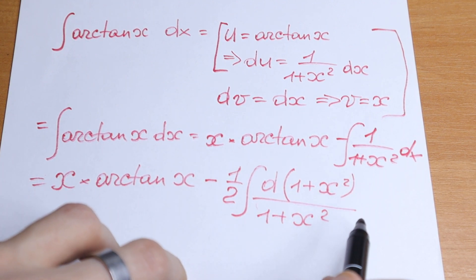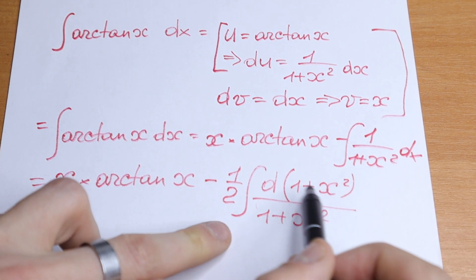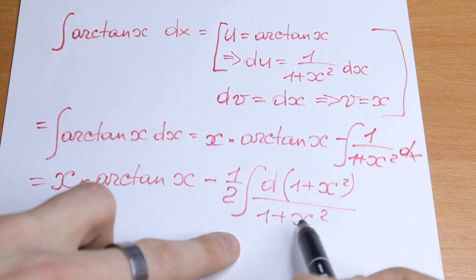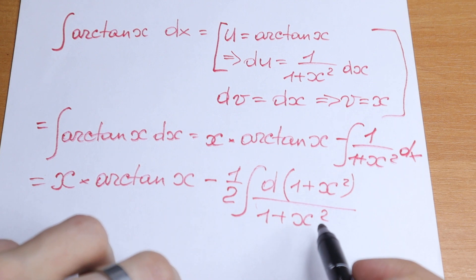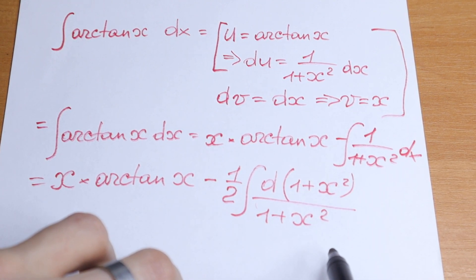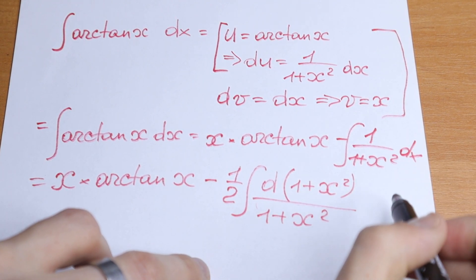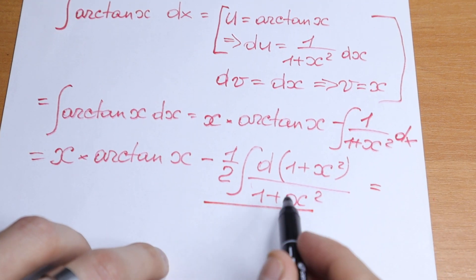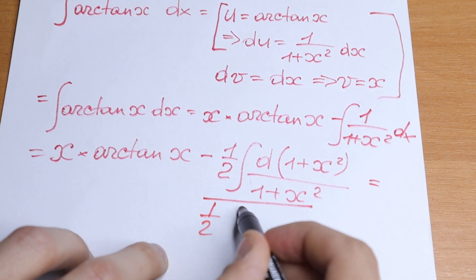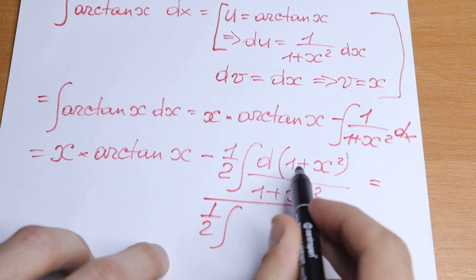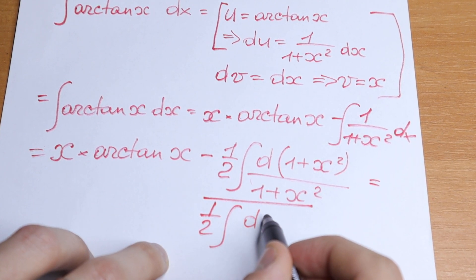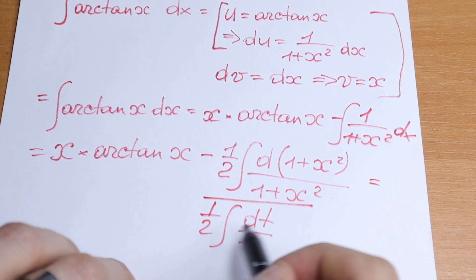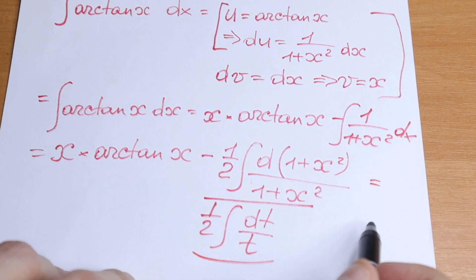If we use a substitution, for example t equals (1 + x²), we get dt over t, which gives us the natural log case. So one half times the integral of dt over t equals one half times the natural log of (1 + x²).